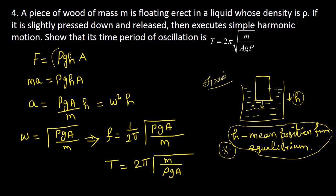The buoyant force is rho into g into h. This is the buoyant force. The force equals pressure times area, so from pressure and area you can get the force. Once you know the force, this is m into a.